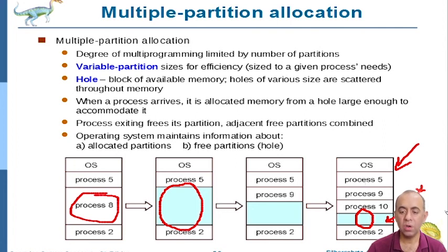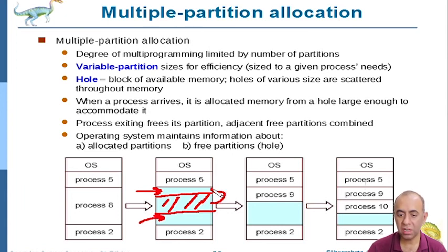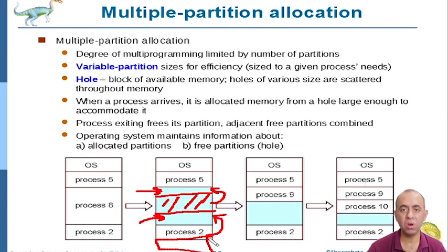One solution to external fragmentation is compaction. For example, after different programs have come and gone, you may have a program here, a free space, then another program, then another free space — and neither free space is large enough to hold a new process. The obvious solution is to push the existing processes upward so that all the holes collect together at the bottom. This merged free space would then be large enough to hold new processes, and this is called compaction. I hope you understood everything — if you have questions, comment below. If you liked the video, press like and please subscribe. Thanks for watching!